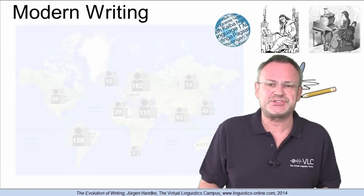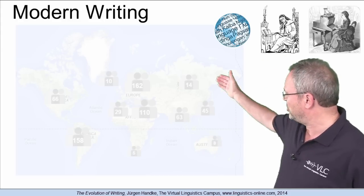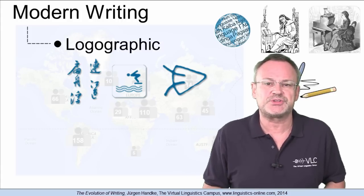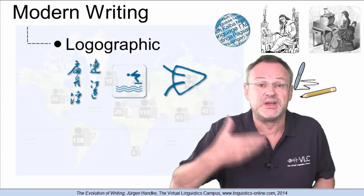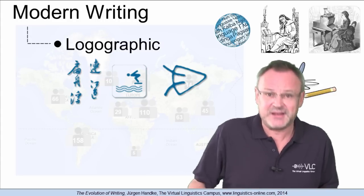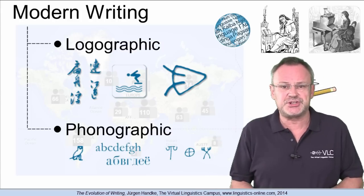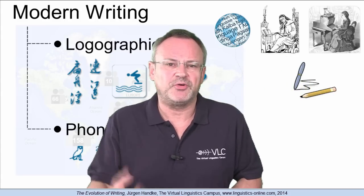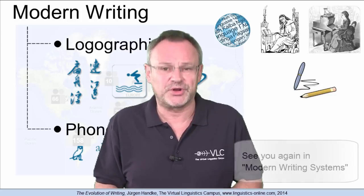Modern writing systems can be divided into two central branches. There are logographic writing systems, which make use of symbols that represent words or concepts, where the shape of the symbol employed is often closely related to the meaning of the respective concept. And there are phonographic writing systems that establish some sort of relationship between the written symbol and its pronunciation. Both modern writing systems have several variants, which will be introduced in a follow-up e-lecture entitled Modern Writing Systems.